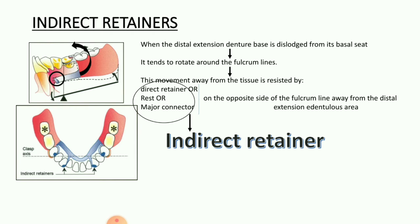Moving on to the indirect retainer. The indirect retainer is mostly active in the case of distal extension denture bases. Whenever the distal extension denture base is dislodged from its basal seat, it tends to rotate around the fulcrum line. This movement around the fulcrum line leads to movement of the prosthesis away from the tissue, and this movement is resisted by the direct retainer, rest, or major connector. The component of a cast partial denture that assists the direct retainers in gaining retention is called the indirect retainer, and it is present on the opposite side of the fulcrum line, away from the distal extension edentulous area.